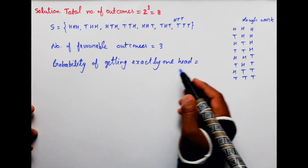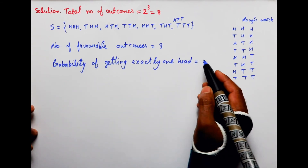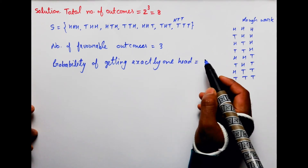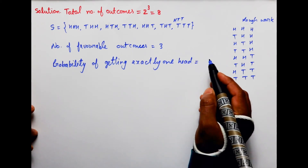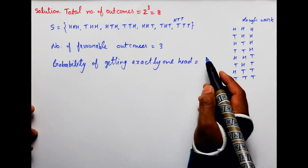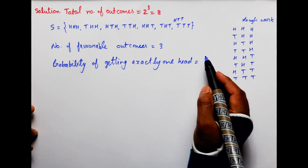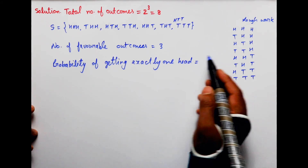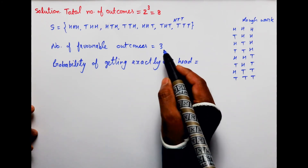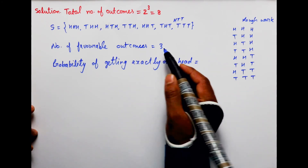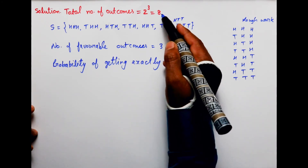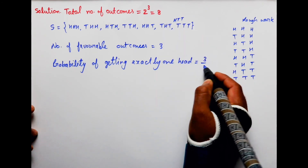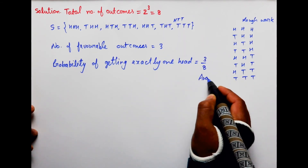Probability of getting exactly one head — बच्चों, probability का formula होता है number of favorable outcomes upon total number of outcomes। तो यहाँ favorable outcomes हैं 3 और total number of outcomes हैं 8, तो यह हो जाएगा 3 by 8। और यह आपका answer होगा।